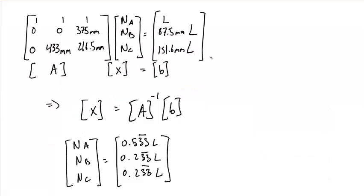Letting Wolfram Alpha do the calculations for us, we found that N_A is equal to 0.533L and N_B and N_C are equal to 0.233L.